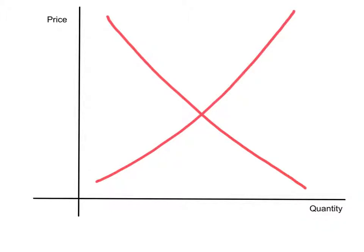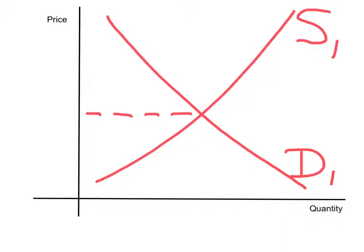Okay, so let's start with our typical upward sloping supply curve, S1, and your typical downward sloping demand curve. That's just our starting point before the changes take place. You can see that the equilibrium price is around this height — let's say P1 — and the equilibrium quantity, drawing a straight line down to the quantity axis, is Q1.